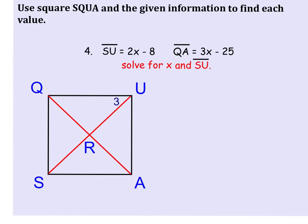In these examples, we're going to use what we just learned about the properties of a square. So in this problem, we are told that SU is equal to 2x minus 8 and QA is equal to 3x minus 25. The first thing that we want to do is solve for x.